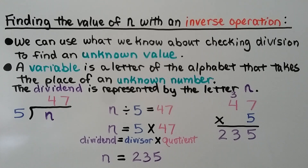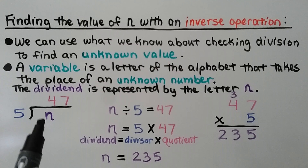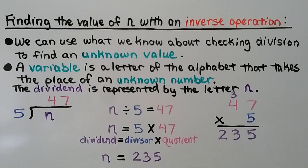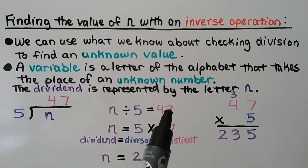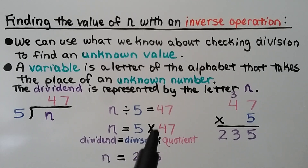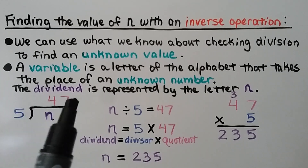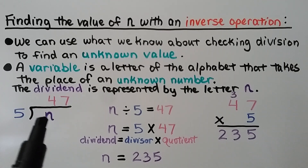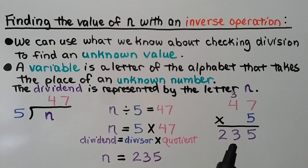Finding the value of n with an inverse operation. We can use what we know about checking division to find an unknown value. A variable is a letter that takes the place of an unknown number. Here the dividend is represented by n. We have n divided by 5 equals 47. Using the inverse operation: n equals 5 times 47. 47 times 5 equals 235, so the dividend n must equal 235.